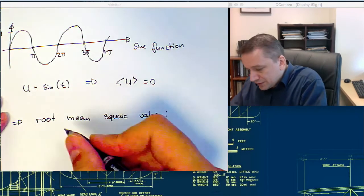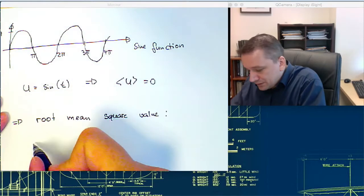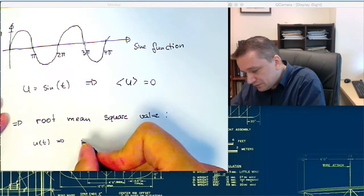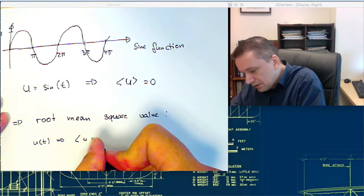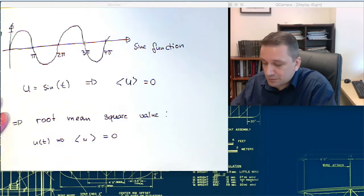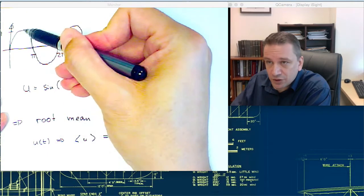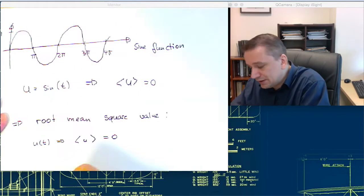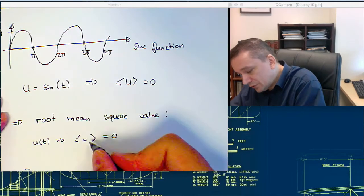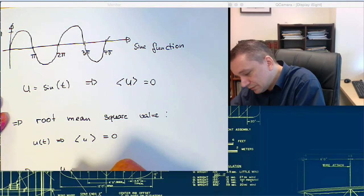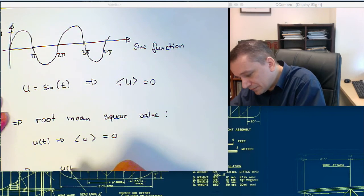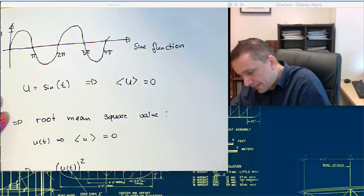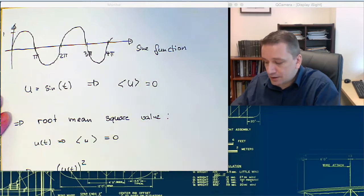So if you, for example, now calculate just u of t, taking a time average of the lowercase of the fluctuation is going to be zero as well, because you have as many fluctuations in the plus part, in the upper part and in the lower part. So what you do instead, you do first a square of the u, the fluctuating part.